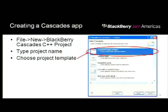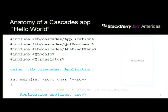Creating a Cascades app is quite simple. Through the IDE, you do File > New BlackBerry Cascades C++ Project and choose from a bunch of templates. I'll walk through the standard empty project. When you go through this, it creates a project that compiles and runs — a good first test if you're new to the platform. If you have compilation errors, something is wrong with your download or setup. The empty project prints Hello World on the screen when deployed to the device.